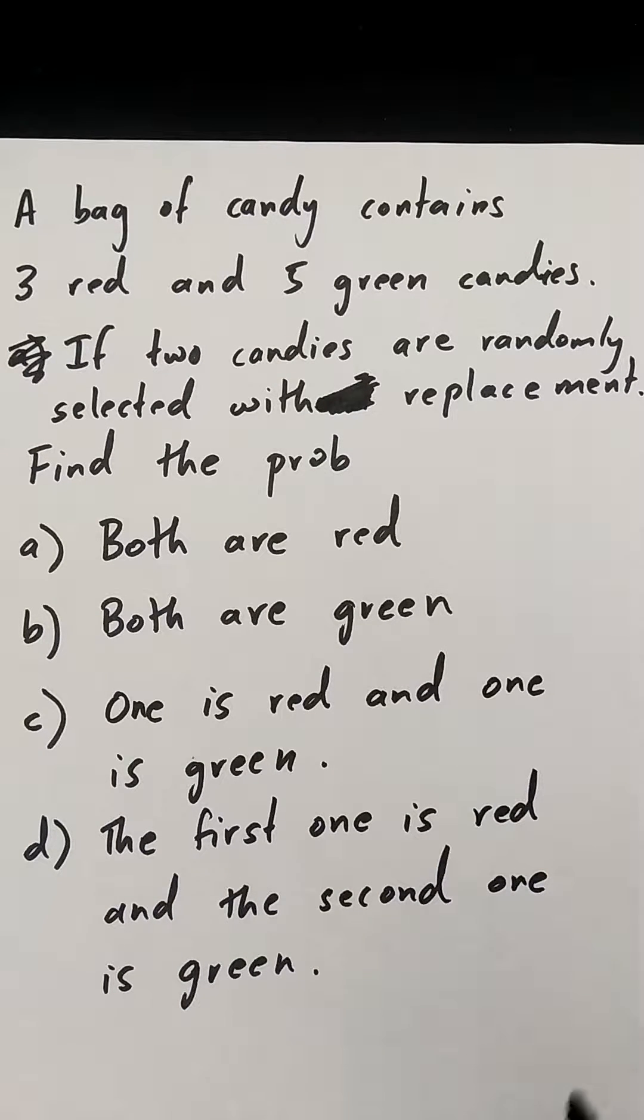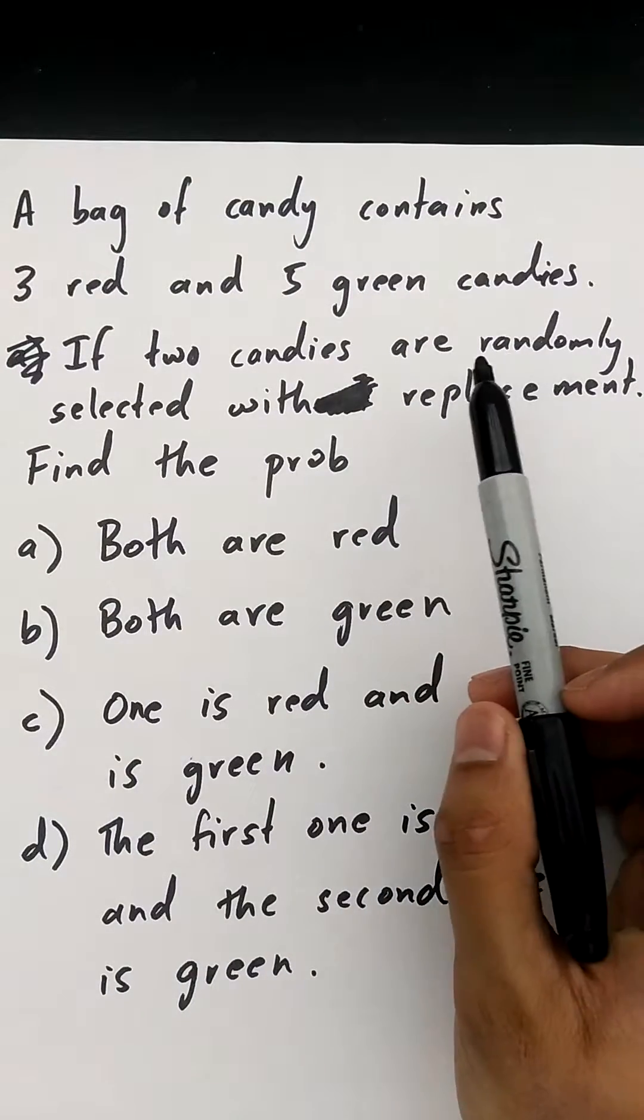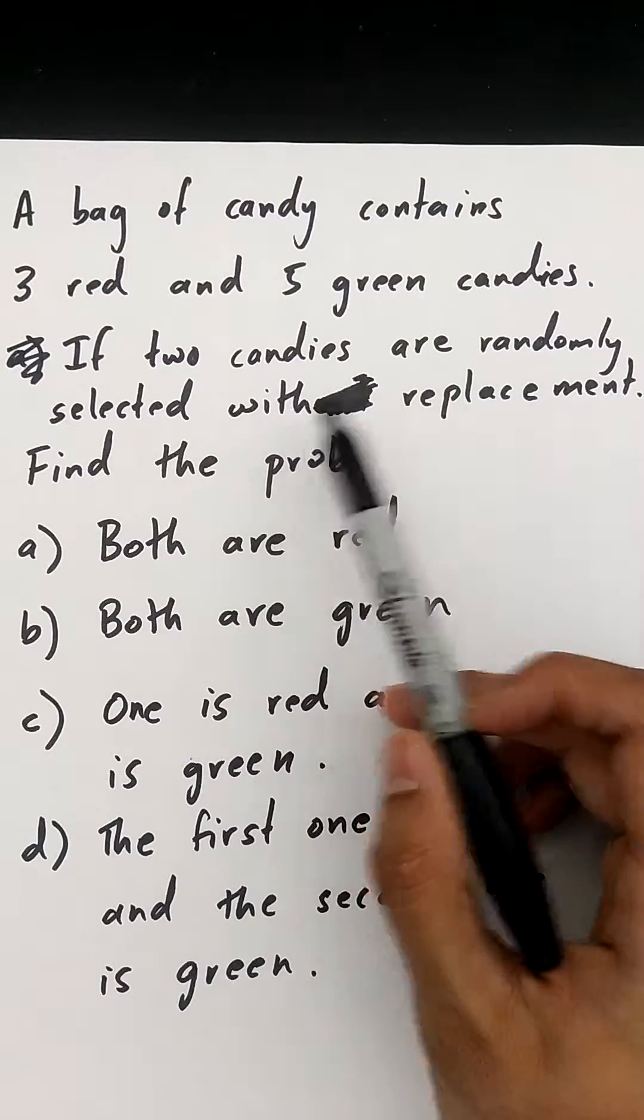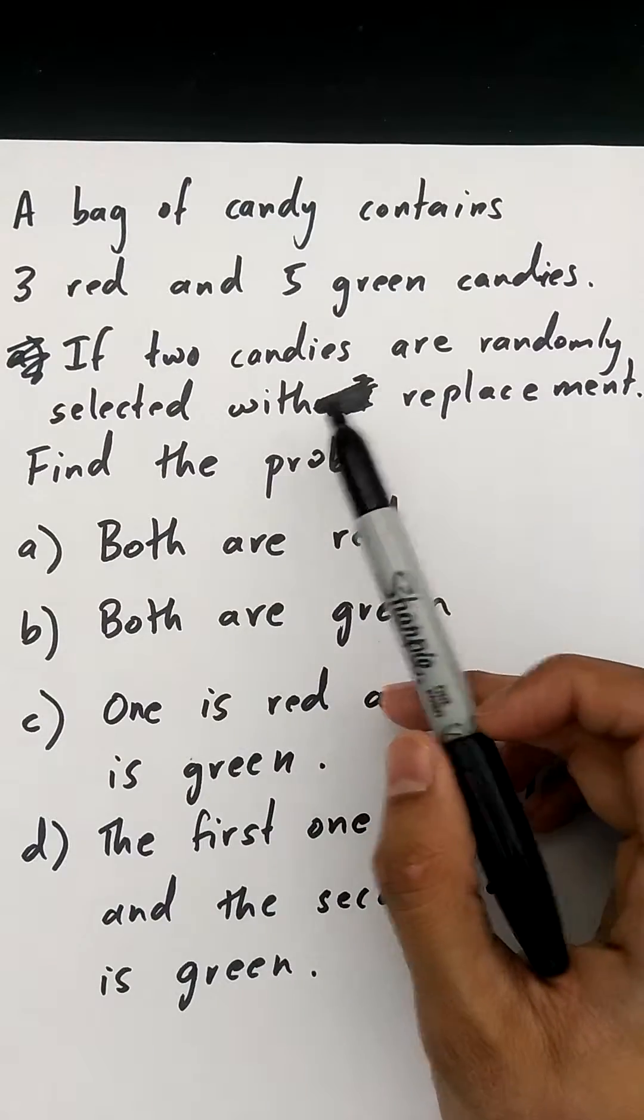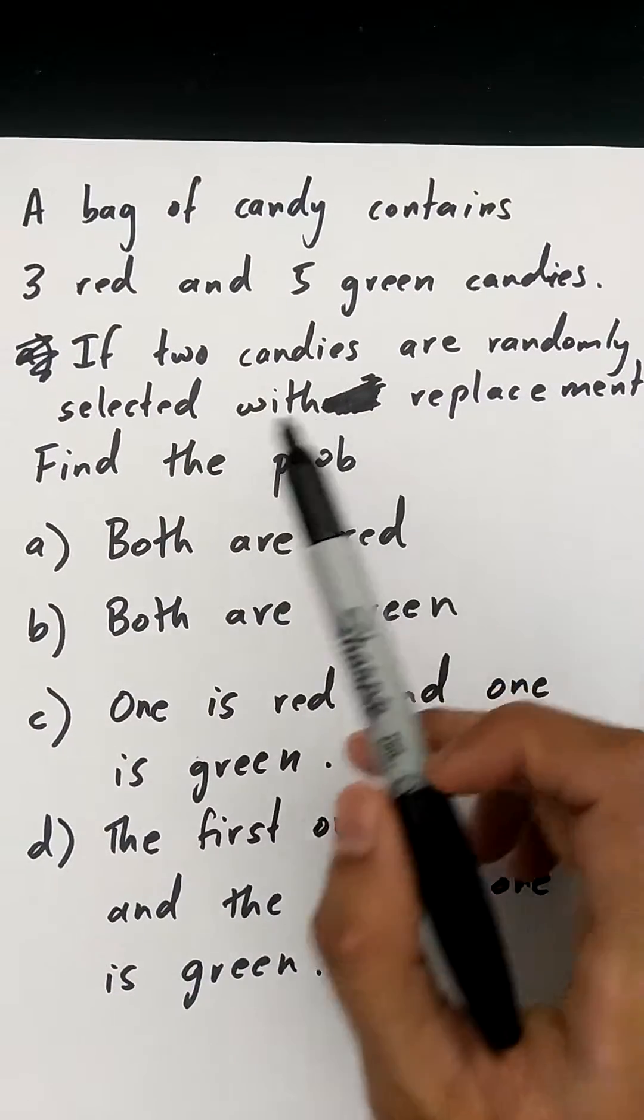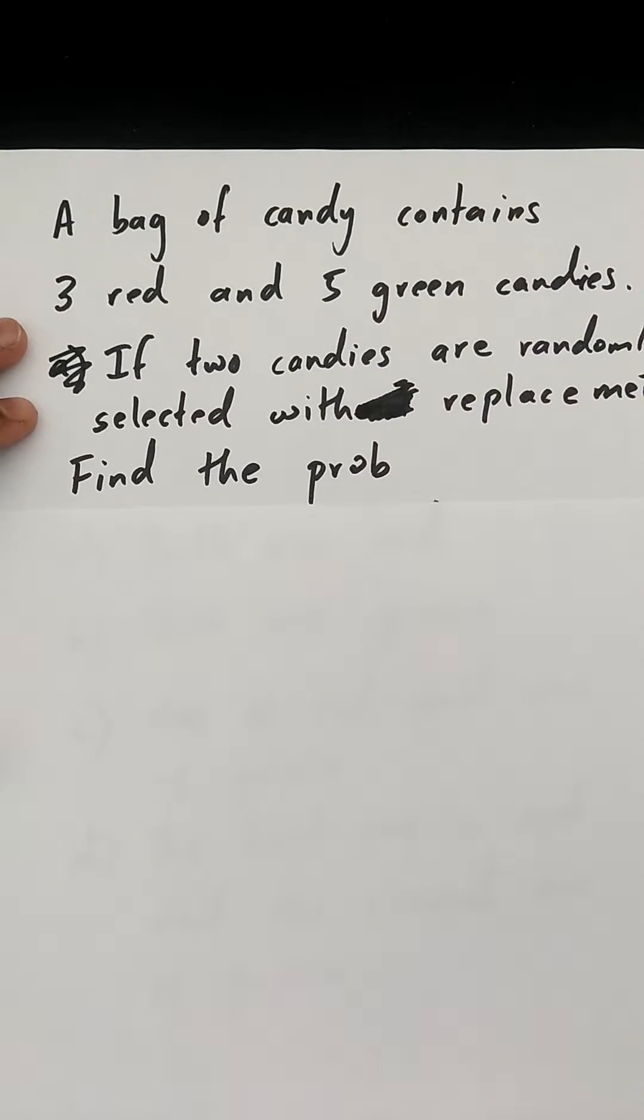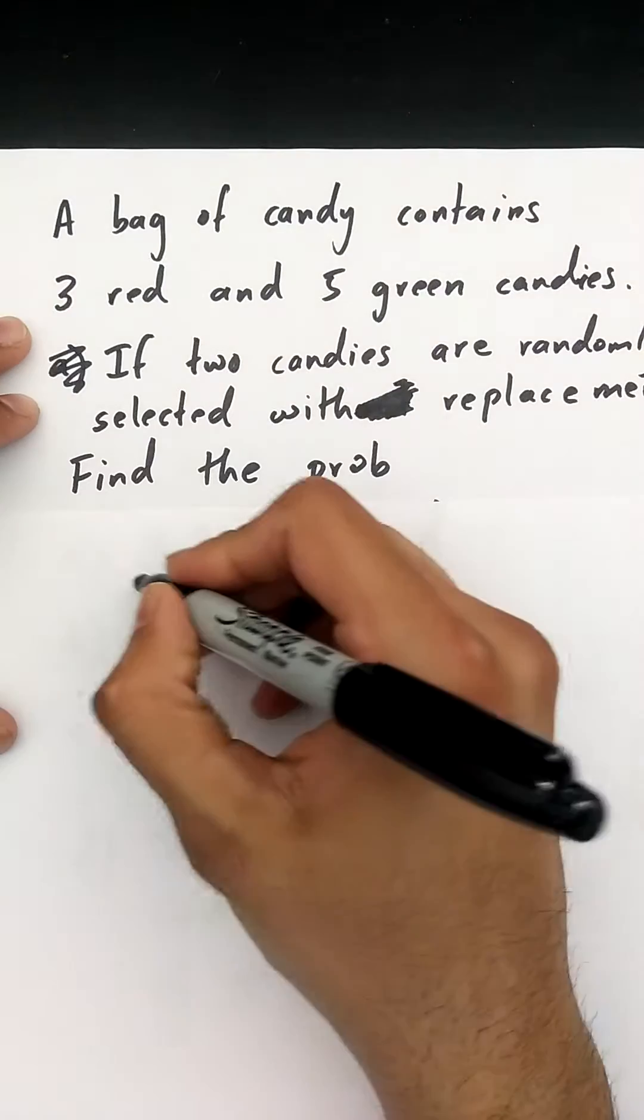This next example is pretty similar to the last one. The only difference now is that two candies are randomly selected with replacement. The last example was without replacement, this example is with replacement. That's pretty much the only difference. So again, I'm going to create a new tree diagram for this. Again, for my first pick,